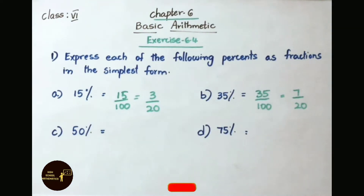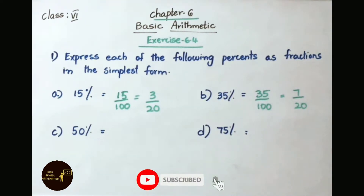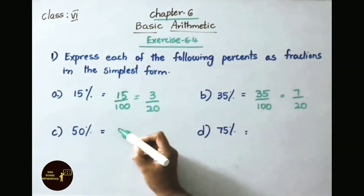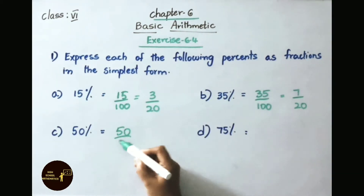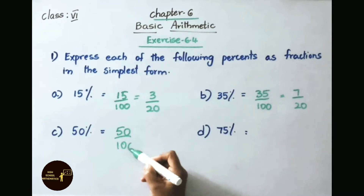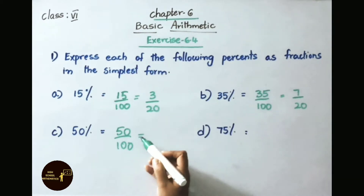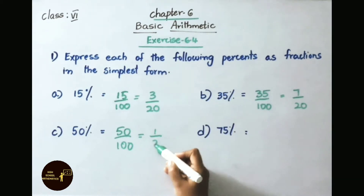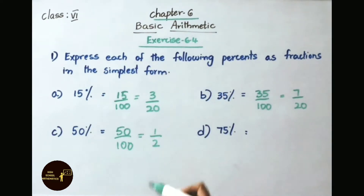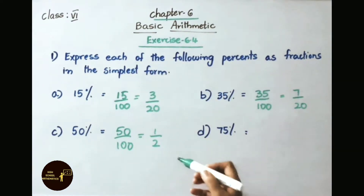Question C: 50 percent. That is 50 by 100. Using the 50 times table: 50 ones are 50, 50 twos are 100. So the answer is 1 by 2.